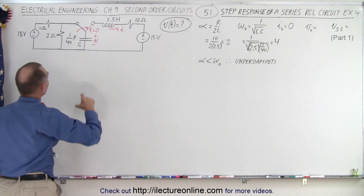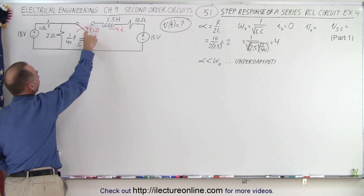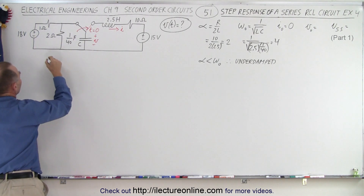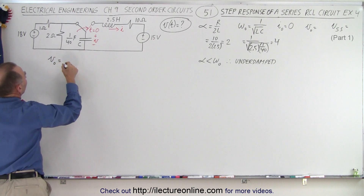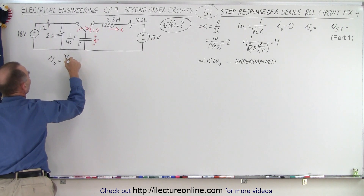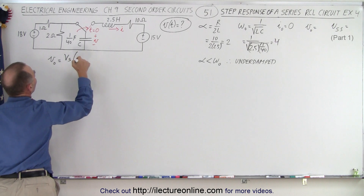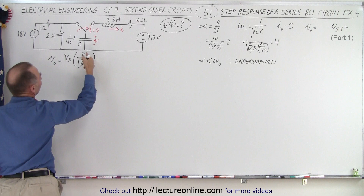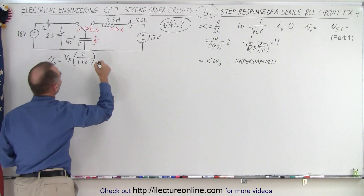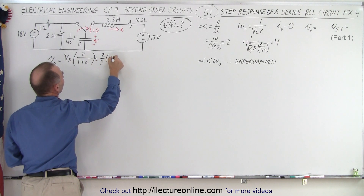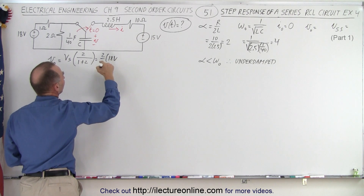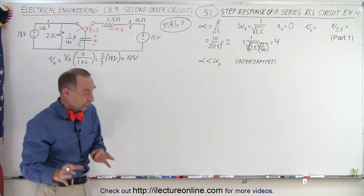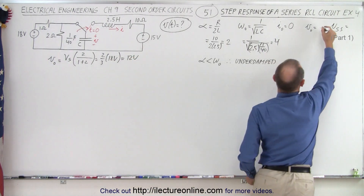How about the initial voltage? We have a voltage divider. The voltage across the capacitor equals the voltage across the 2-ohm resistor. The initial voltage across the capacitor equals the source voltage times the resistance over the total resistance — two-thirds of 18 volts — which is 12 volts. So the initial voltage across the capacitor is 12 volts.